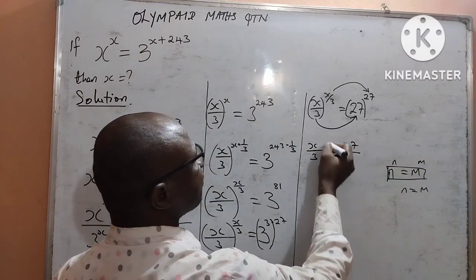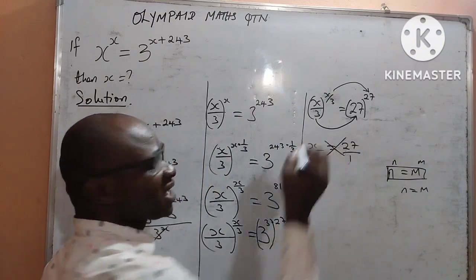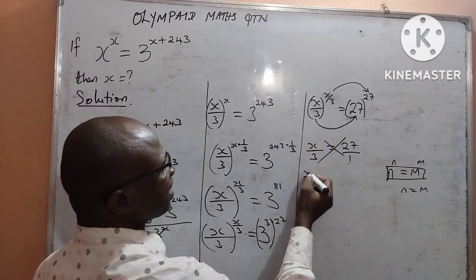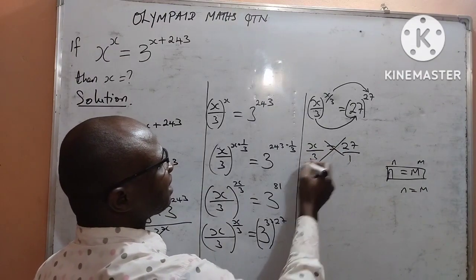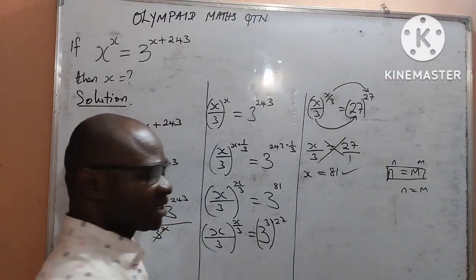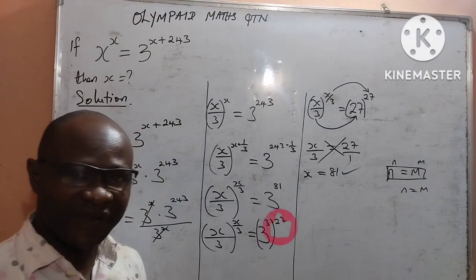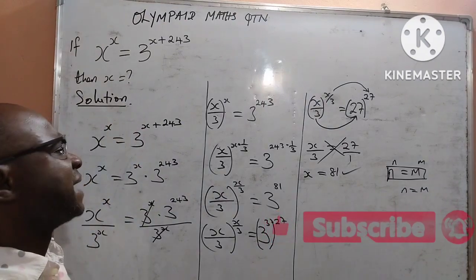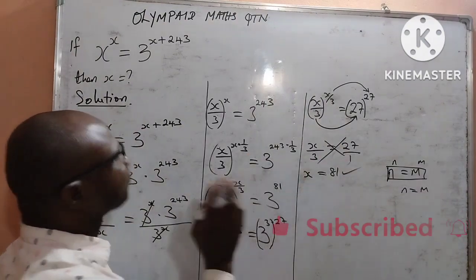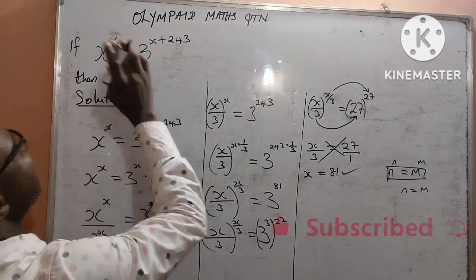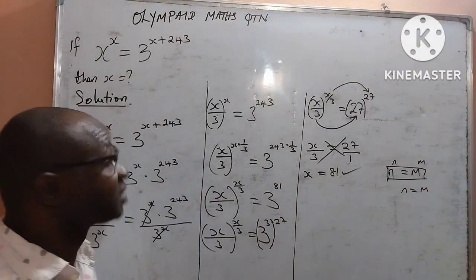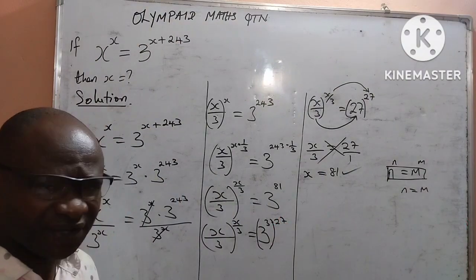We can write 27 over 1 and do cross multiplication: 1 times x is x, and 3 times 27 is 81. The final answer for the value of x is 81. Now that we have the value of x, that is what the question required us to solve.